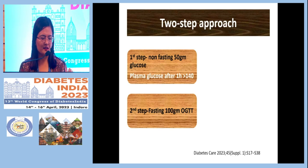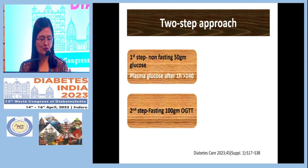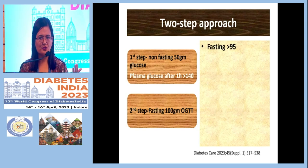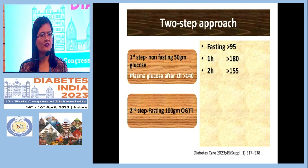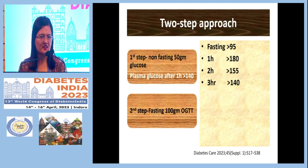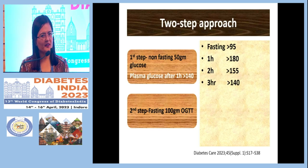ACOG recommends a two-step criteria. First, plasma glucose is measured one hour after a meal; if more than 140, you proceed to the second step: 100-gram glucose OGTT with cutoffs of fasting more than 95, one-hour more than 180, two-hour more than 155, or three-hour more than 140. If any two values are positive, the patient has gestational diabetes.